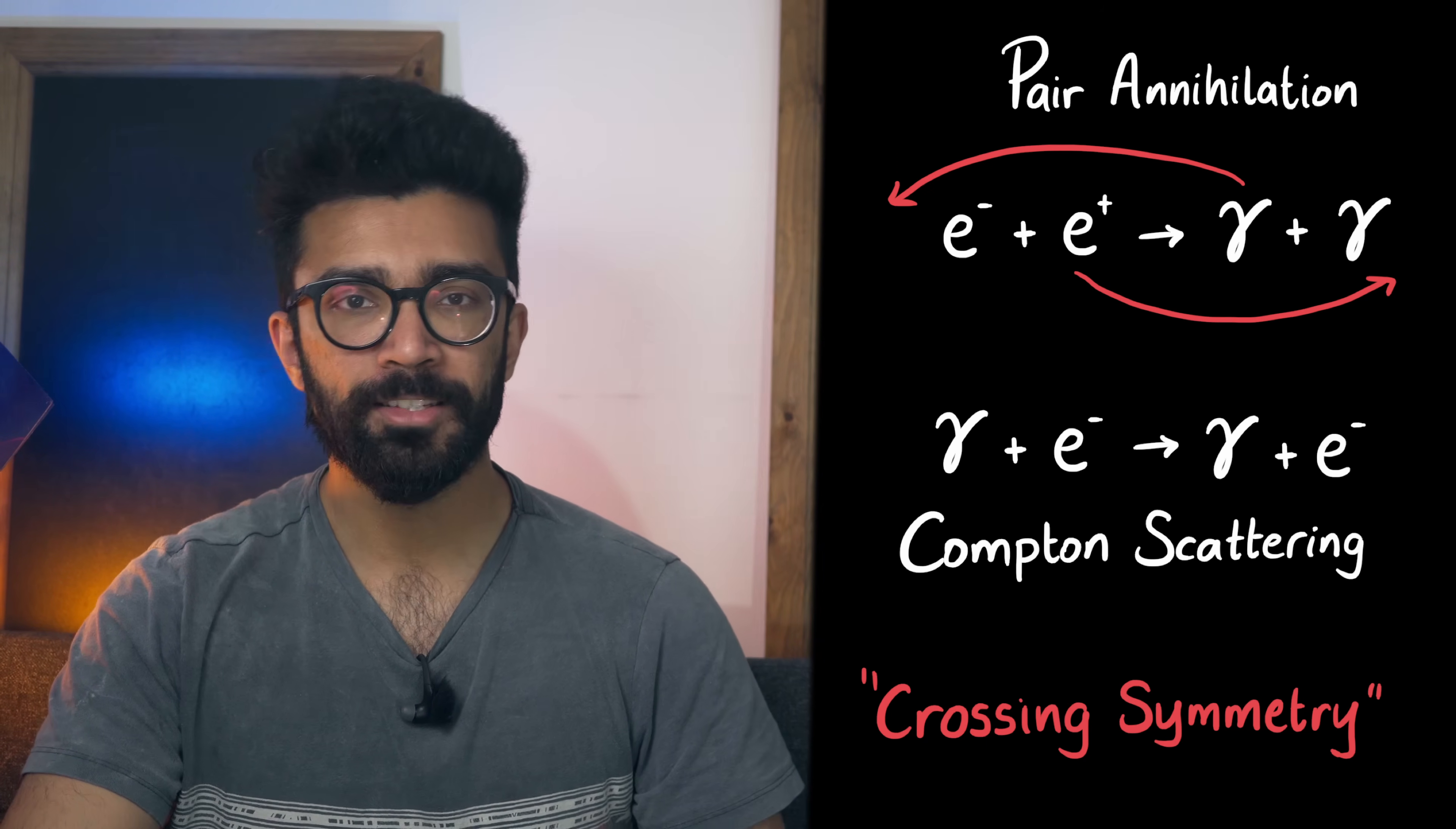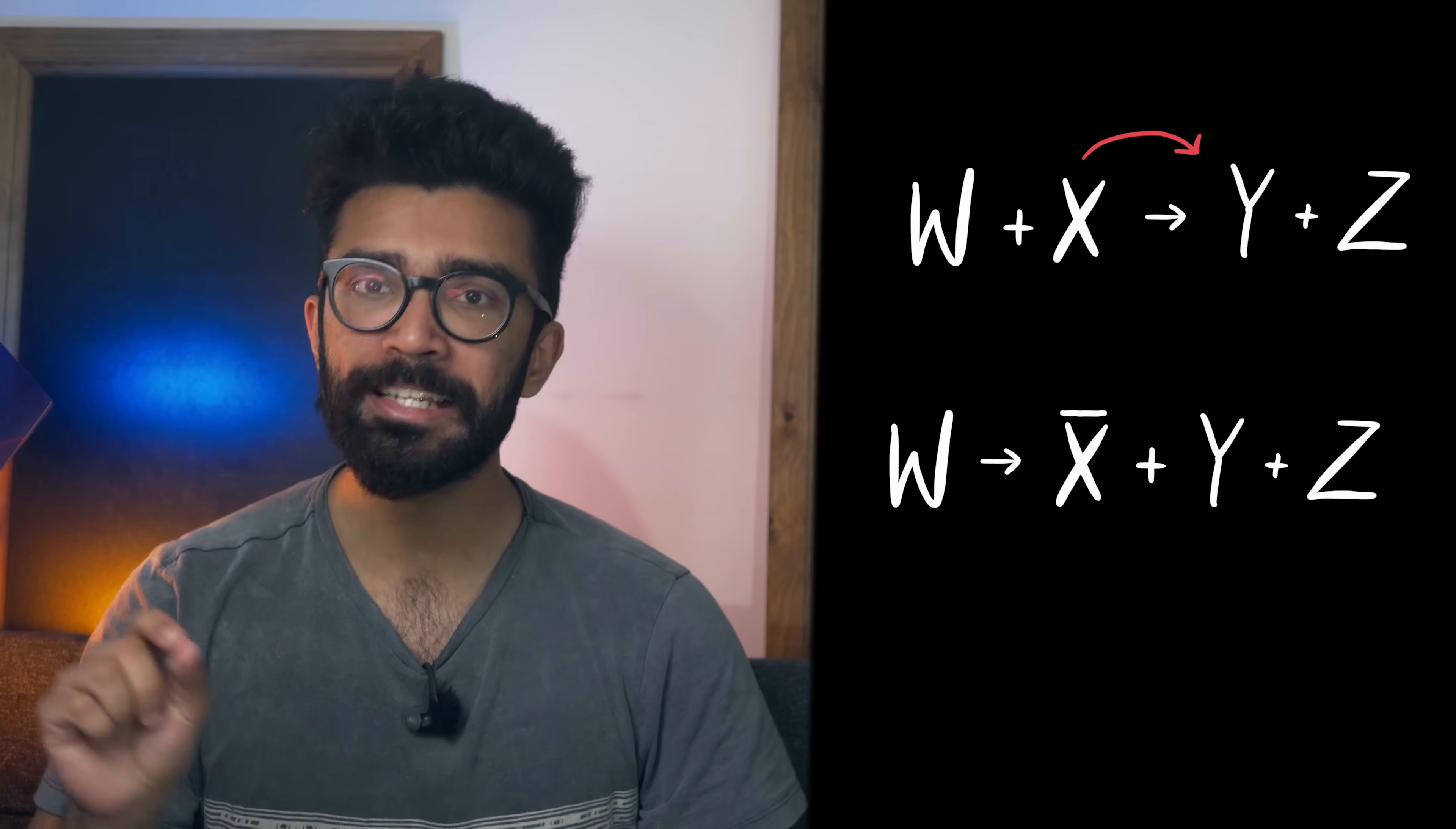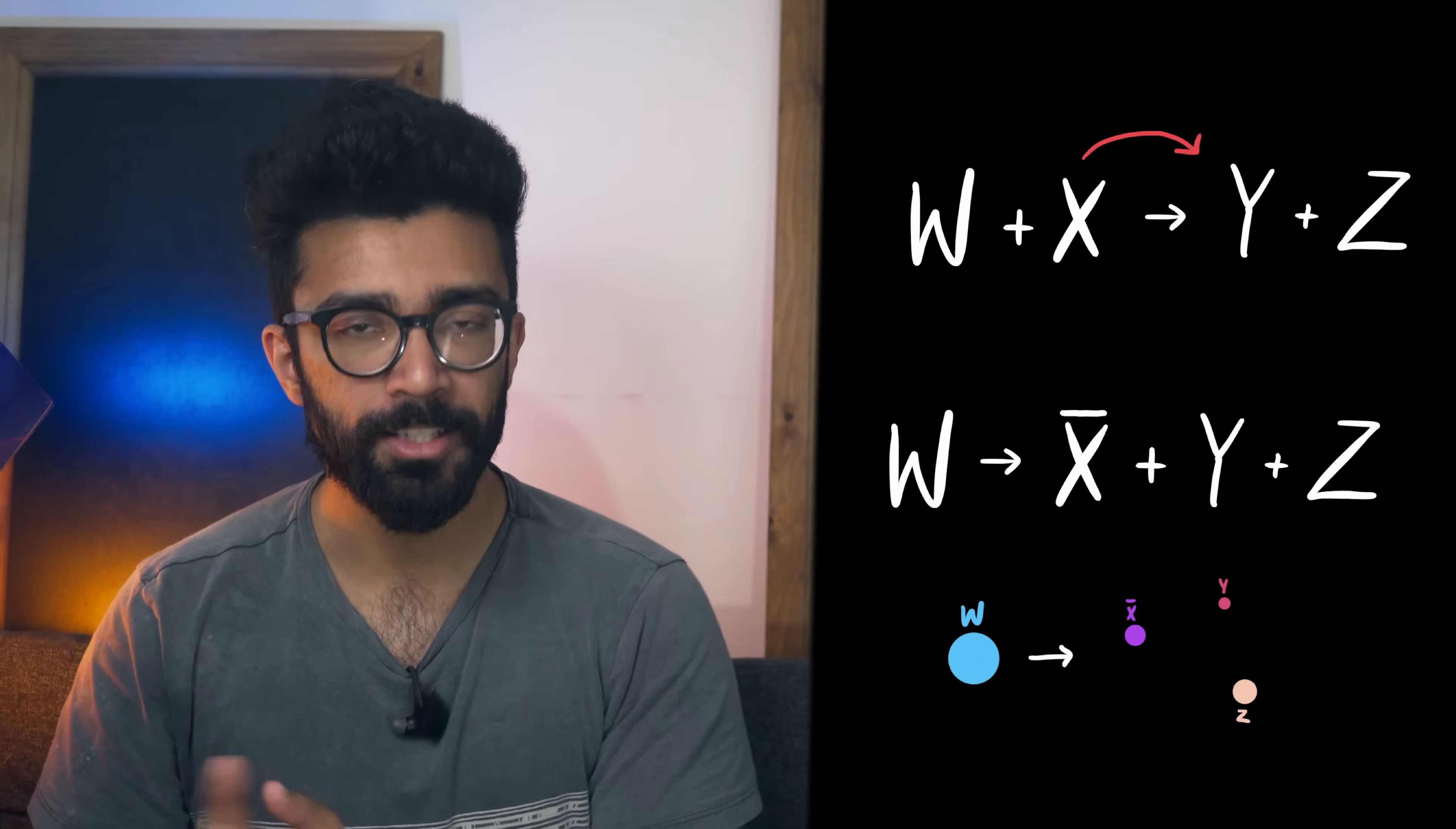For example if we had some generic particles w and x interacting to form some new particles y and z then we could use crossing symmetry to move x to this side if we consider its antiparticle. Now we're saying that w can decay into anti-x y and z and in principle this is okay but it's only possible if the total mass of the three particles on this side is less than or equal to the mass of w otherwise there wouldn't be enough mass or energy for w to split into these three.